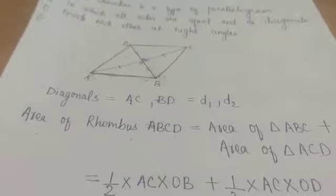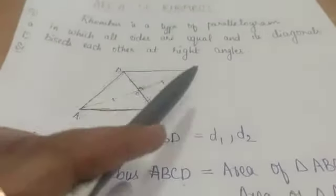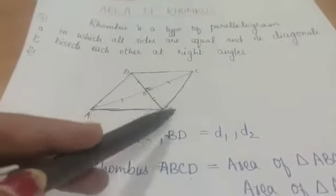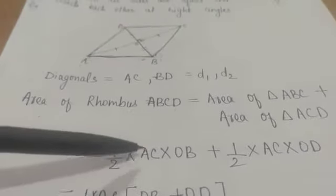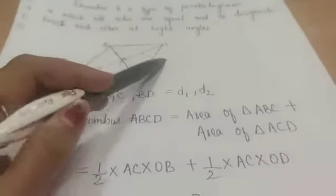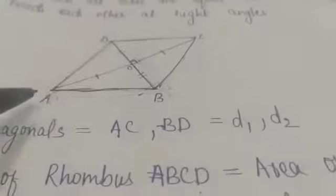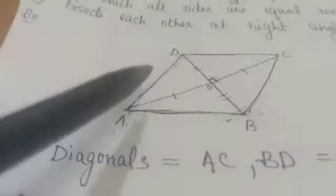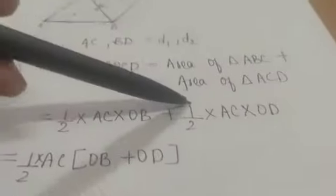Since we have already discussed that area of a triangle is given by half base into height. In triangle ABC, we have base AC and height OB, so area of triangle ABC equals half AC into OB. Similarly, for triangle ACD, we have base AC and height OD, so area of triangle ACD equals half AC into OD.